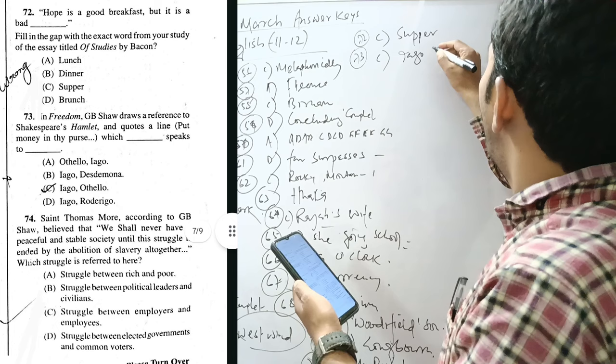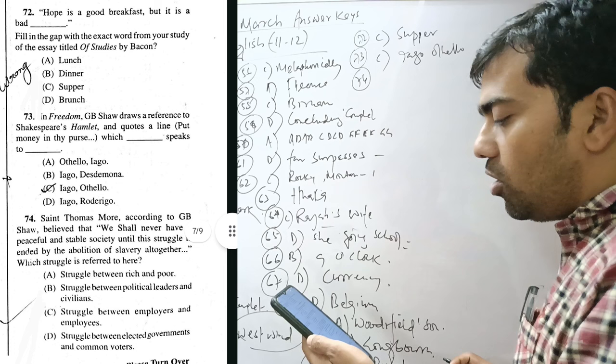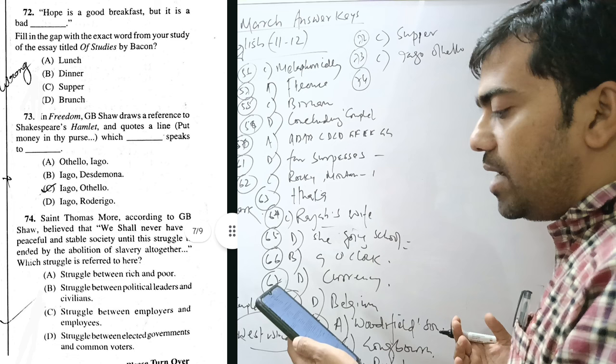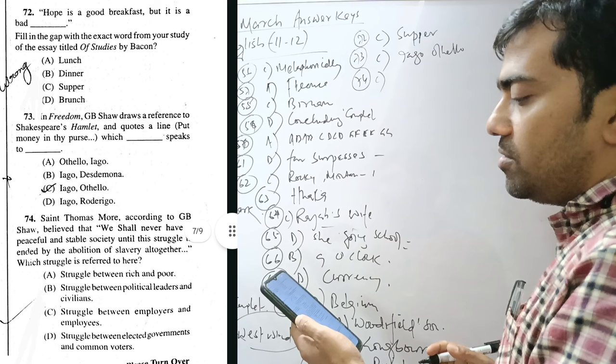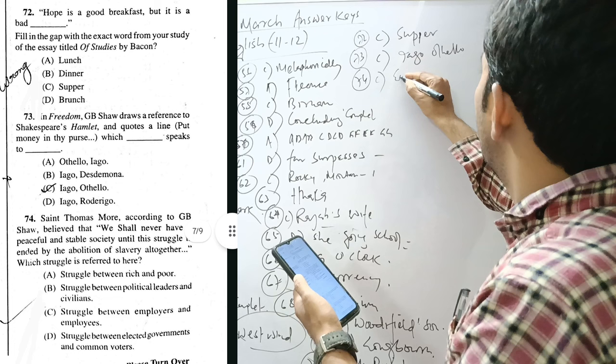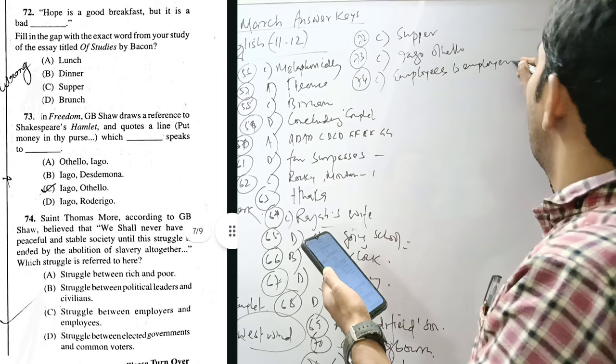Question 74. St. Thomas More, according to G.B. Shaw, believed that we shall never have a peaceful and stable society until this struggle is ended by the abolition of slavery altogether. Which struggle is referred to here? It is the struggle between employees and the employers. G.B. Shaw was against the forced imposition of works upon the laborers, upon the employees by the employers.